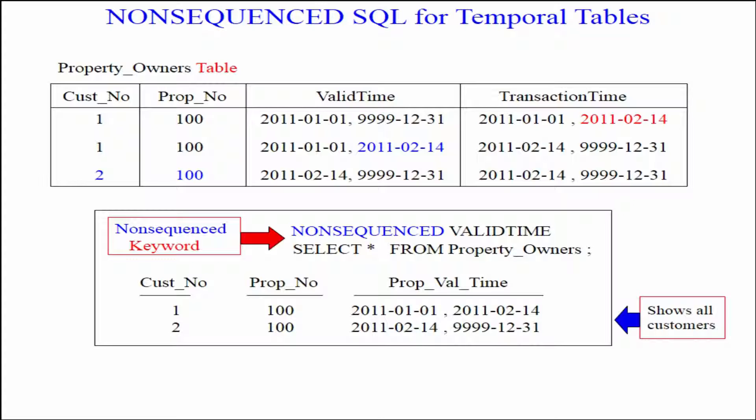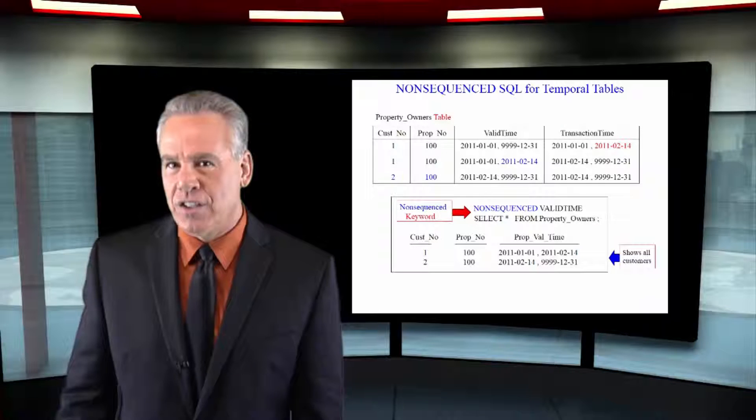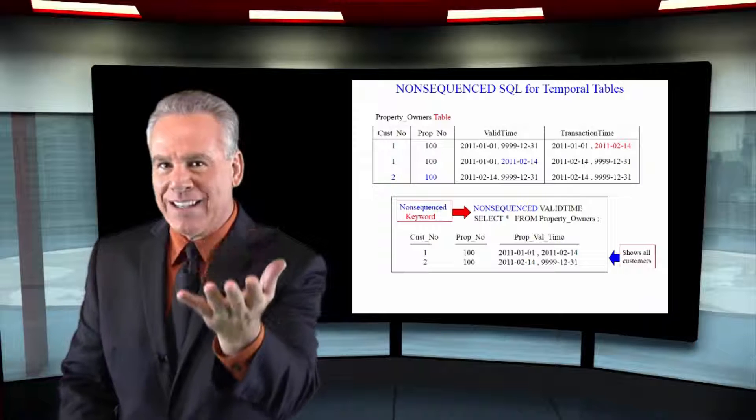They wouldn't even know there are closed rows, but for an auditor who wants to come in and see what really happened to the millisecond, they can come in and they can put keywords in front of the SQL such as non-sequenced valid time and it says, I will show you everything in this table based on the valid time.